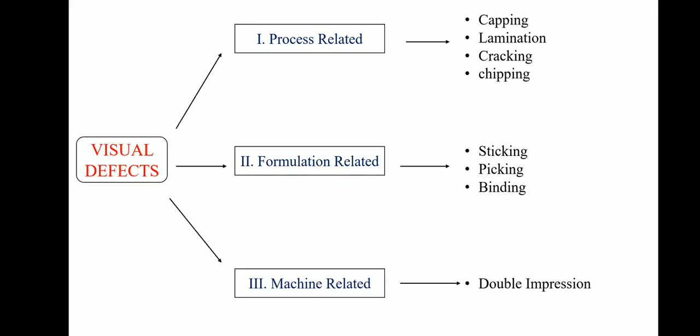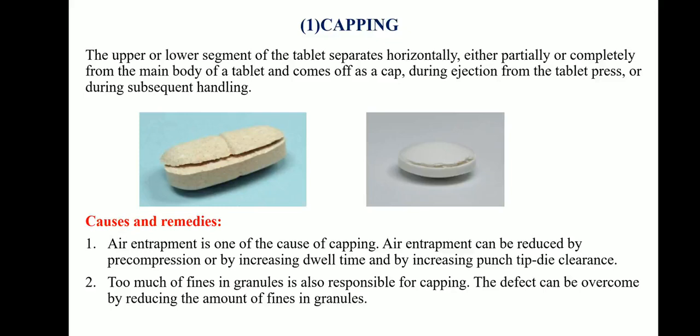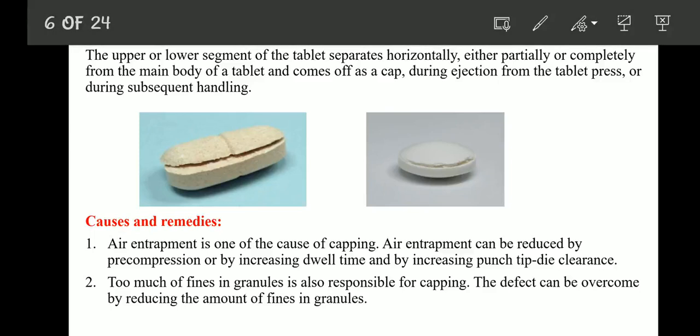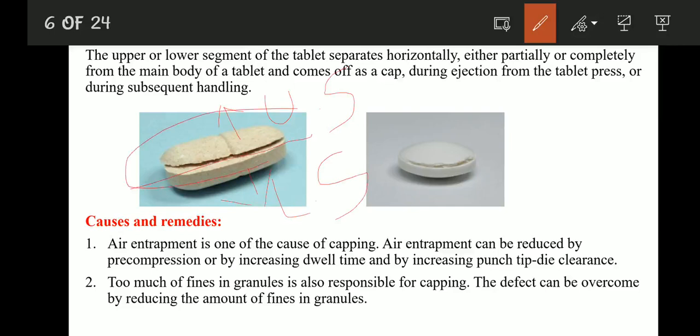The defects under process related are capping, lamination, cracking, and chipping. Formulation-related defects are sticking, picking, and binding. The machine-related defect is double impression. The first process-related defect is capping. The upper or lower segment of a tablet separates horizontally, either partially or completely, from the main body of the tablet and comes off as a cap during ejection from the tablet press or during subsequent handling.